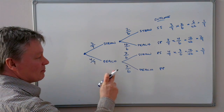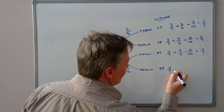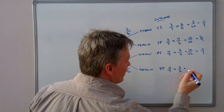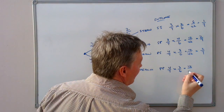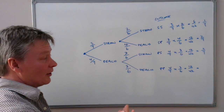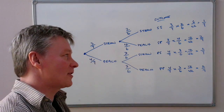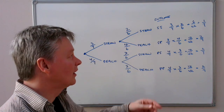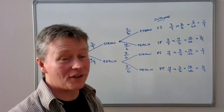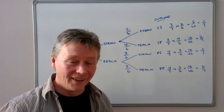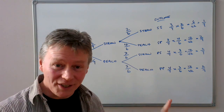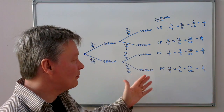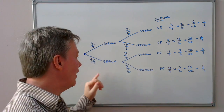The last outcome is peach and peach: four sevenths multiplied by three sixths gives 12 out of 42, which reduces to two out of seven. You'll also notice, as we said before about certainty, that all the probabilities add up to one: one seventh plus two sevenths plus two sevenths plus two sevenths equals seven sevenths, which is one.